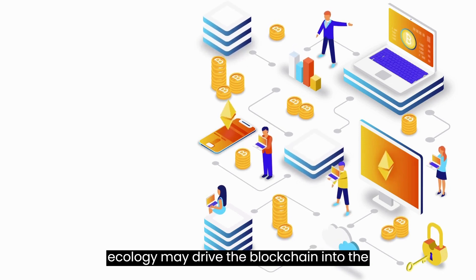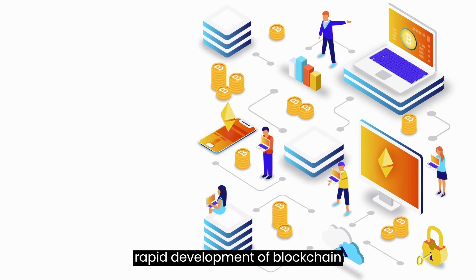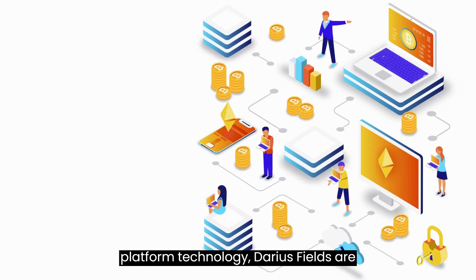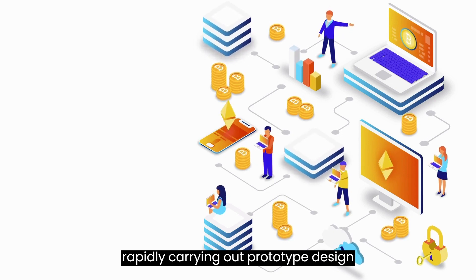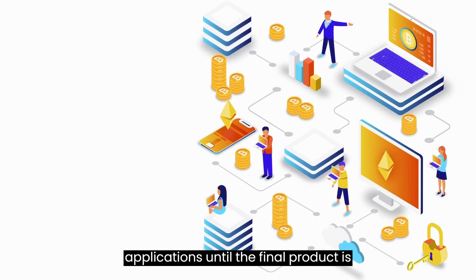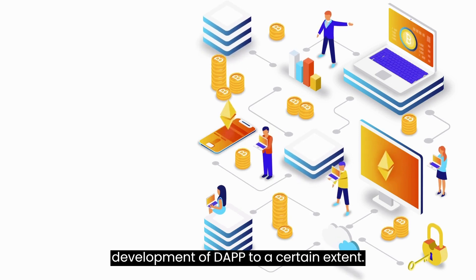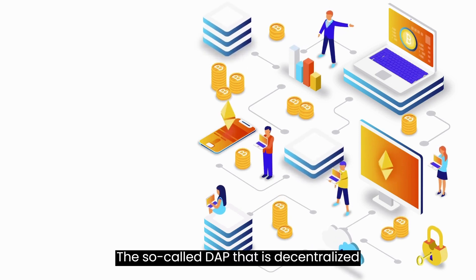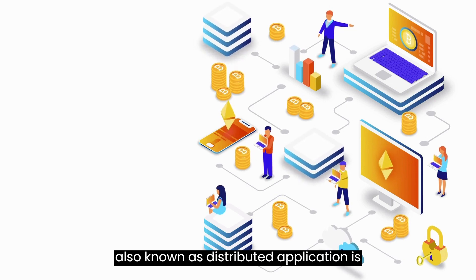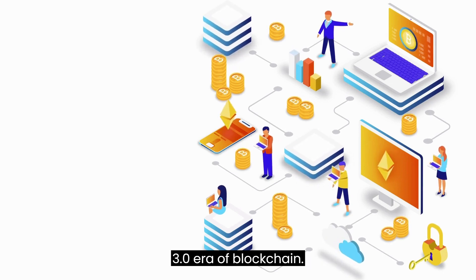DApp ecology may drive the blockchain into the 3.0 era. With the rapid development of blockchain technology, especially the underlying platform technology, various fields are rapidly carrying out prototype design and functional testing of blockchain applications until the final product is launched, which has detonated the development of DApp to a certain extent. The so-called DApp — decentralized application, also known as distributed application — is considered to be the initiator of the blockchain 3.0 era.